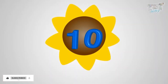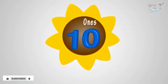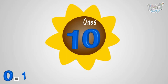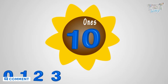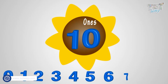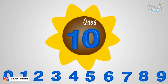The rightmost digit is in the ones place in any number. The digits zero, one, two, three, four, five, six, seven, eight, and nine can be in the rightmost place, also called the ones place or units place.